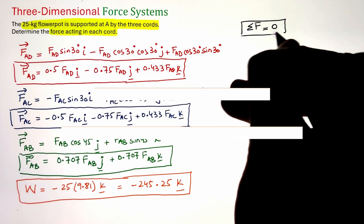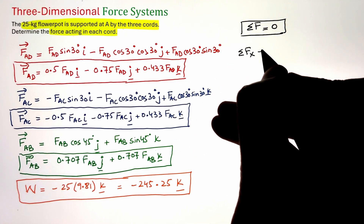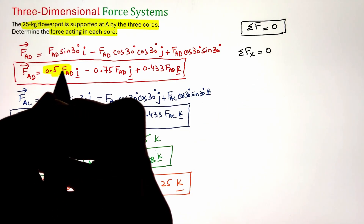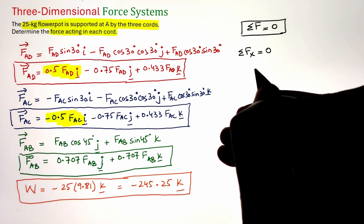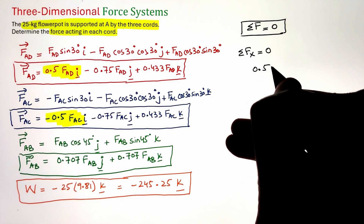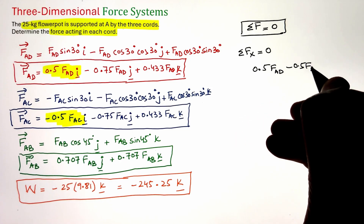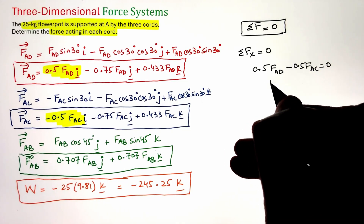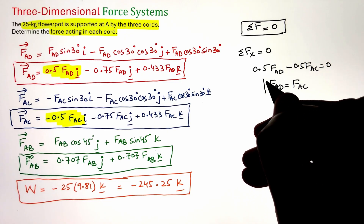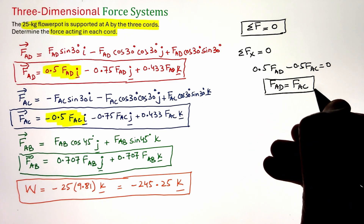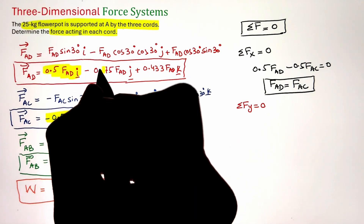Now let's apply the equilibrium equation: summation of forces equals zero. Starting with the summation of forces along the x-direction equals zero, we add all i components together. Only two forces have i components, and they are equal in magnitude and opposite in direction. This gives us F_AD = F_AC, meaning these two ropes have the same force.